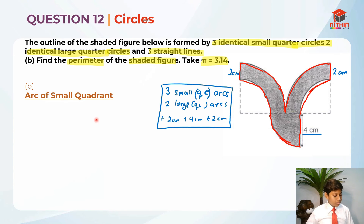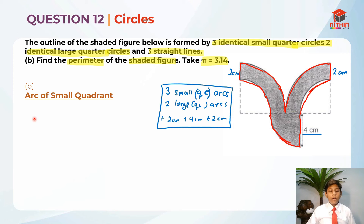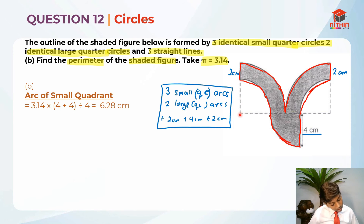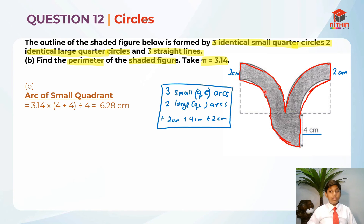To find the arc of a small quarter circle, we need to use the formula for circumference: pi times d. So it is 3.14 times (4 + 4). The diameter is 2 radii — one radius is 4cm, so two radii give us 4 + 4 = 8. Then we divide by 4 because this is just a quarter circle, not the full circle. So 3.14 times 8 divided by 4 gives us 6.28cm.